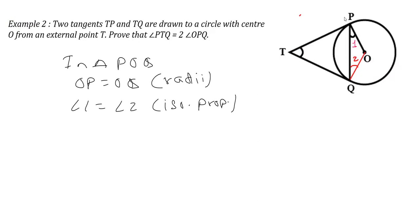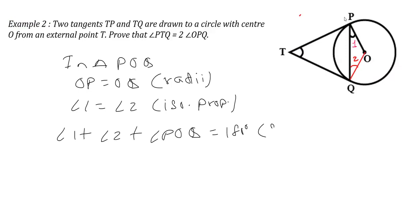Now, once we are done with this, we can apply the angle sum property in this triangle. In the same triangle, we can write angle 1 plus angle 2 plus angle POQ is equal to 180 degrees — by angle sum property. We are considering triangle POQ and applying angle sum property: the sum of the three angles is 180 degrees. We can mark this as equation 1.